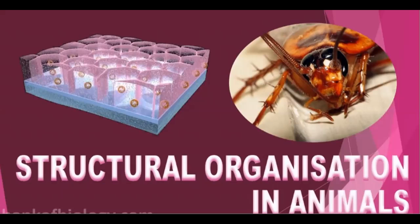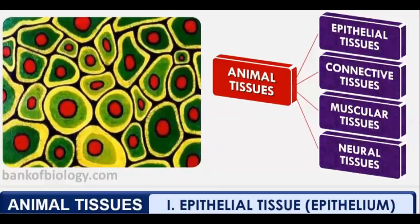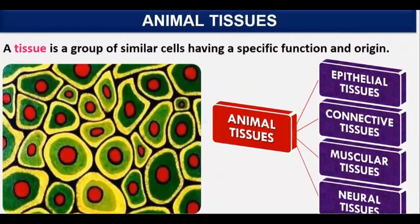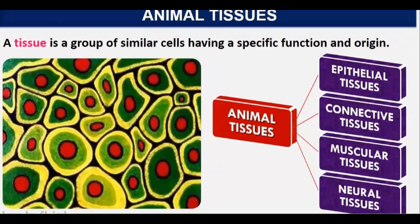We are going to start with animal tissues — this should take about two or three days. A tissue is a group of similar cells having a specific function and origin. Animal tissues are of four types.